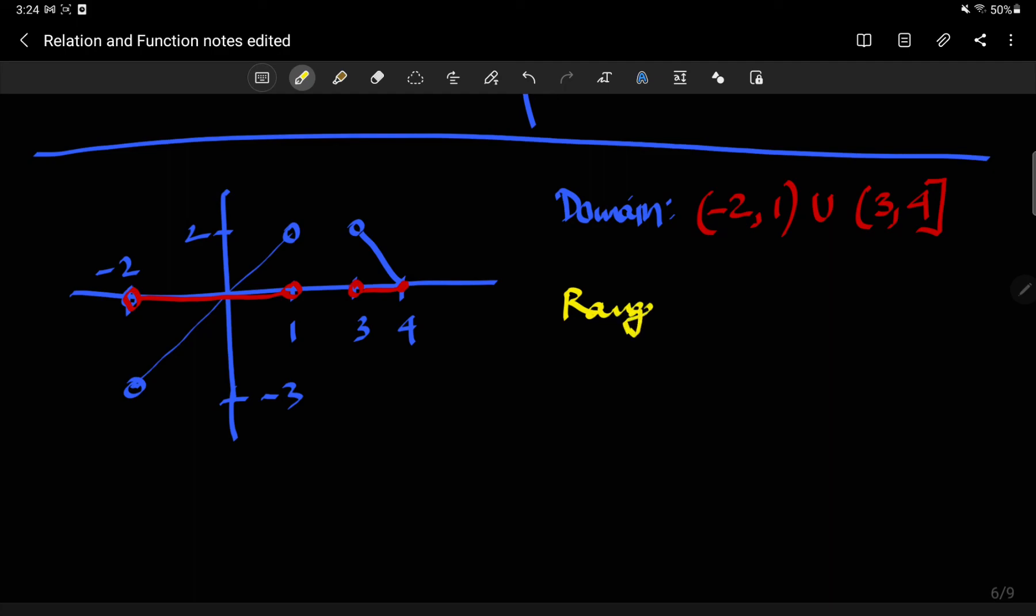What about range? For range, I'm going to look at the y values. And the y values, again, they cannot be negative 3. So it's a hollow dot and then they go to 2. There's no output beyond 2 and there's no output below negative 2. So the range is negative 2 not included to 2 included.